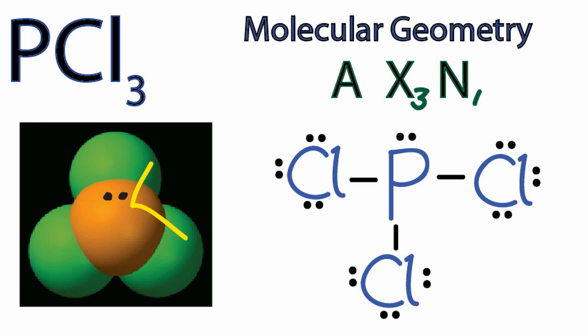And it actually turns out to be, when we look at experimental data, to be 100 degrees, not that 109.5. So the AXN notation gives us a good idea about the bond angles, and a very good idea about the shape of the molecule. So PCl3 has the molecular geometry of trigonal pyramidal.